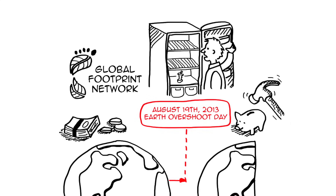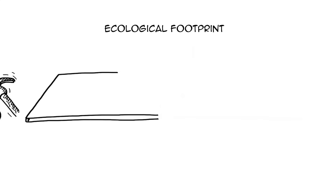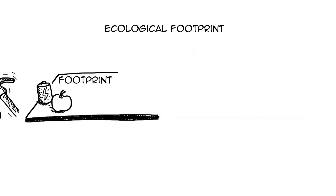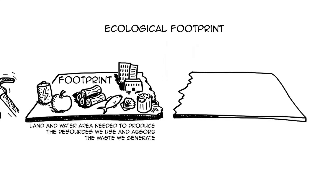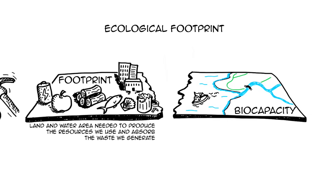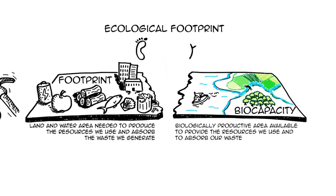Our ecological footprint measures how much land and water area we need to produce the resources we use — things like energy, food, land for settlements, timber, seafood — and to absorb the waste we generate. Our biocapacity is the amount of biologically productive area available to provide those resources and absorb the waste. So we can compare our footprint and biocapacity to see if we are well balanced or not.